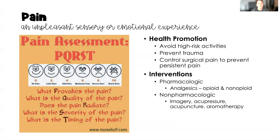For young children, especially under age three, we use a behavior-based scale such as the FLACC scale. Once children reach age three, we can use the Wong-Baker Faces scale, which you can see on the slide. Starting at age seven, we can use the traditional one-through-ten scale. That is how we assess the severity of pain. The last assessment — T — is timing: when did the pain start and how long has it lasted.